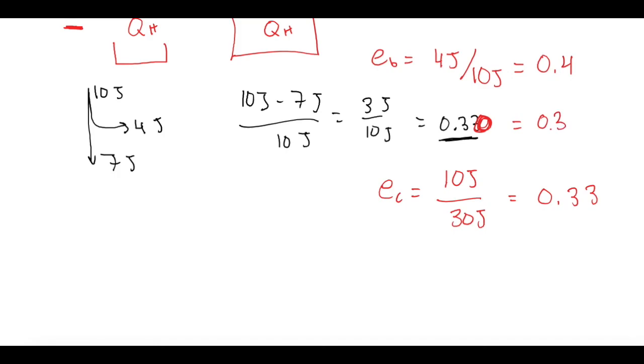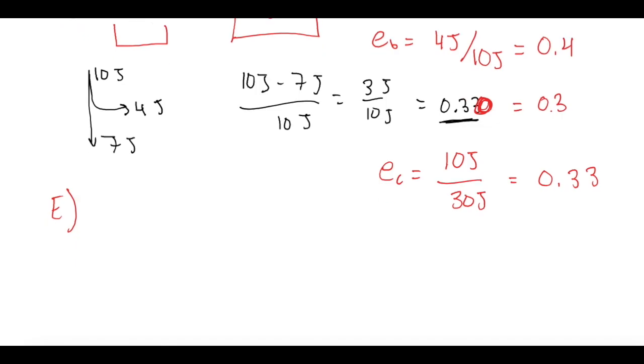So now for part E, we want to know which of these breaks the second law of thermodynamics. So we figured out that the maximum efficiency for all of these engines is 0.5 or 50%. So now that we figured out the actual efficiency, if any of those exceeds 50%, that violates the second law of thermodynamics. And for engine A, we got an actual efficiency of 60%. So for part E, the answer is A, engine A.